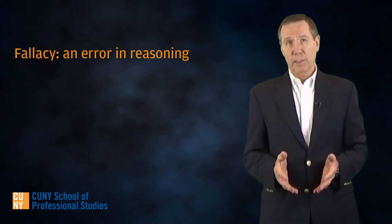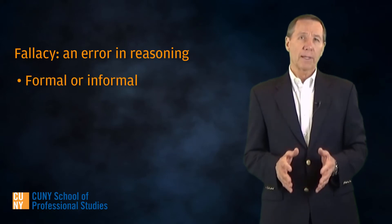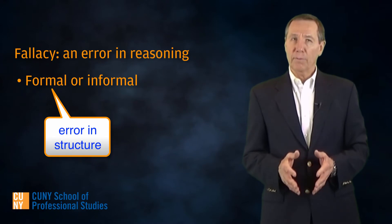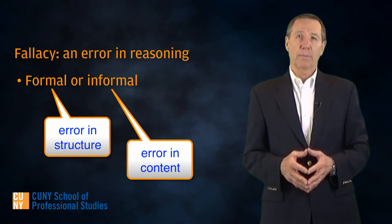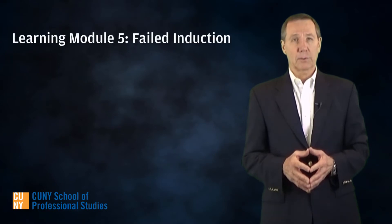Fallacies can be either formal or informal. A formal fallacy is an error in the structure of an argument. An informal fallacy erroneously construes an argument's content, often by misapplying the meaning of a word. In Learning Module 5, we'll take a look at fallacies in general and then turn to the informal fallacies associated with failed induction.